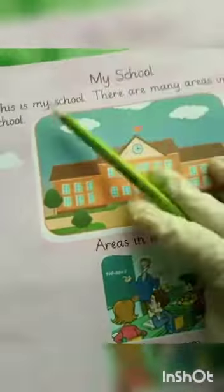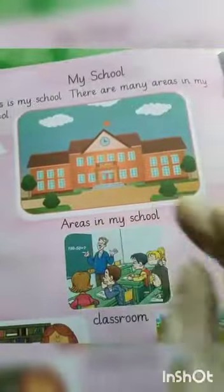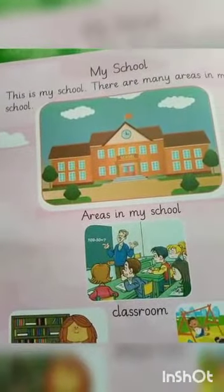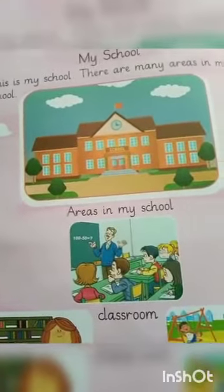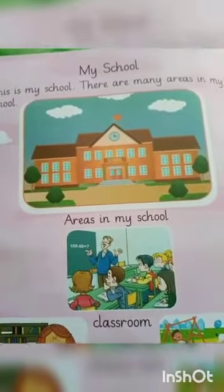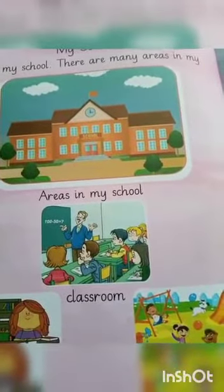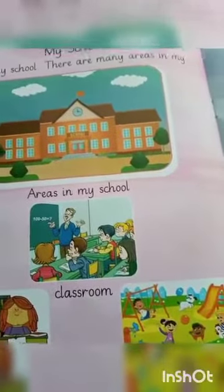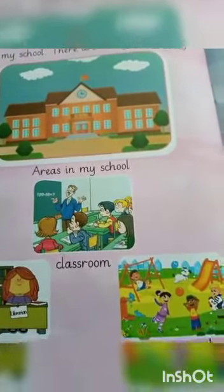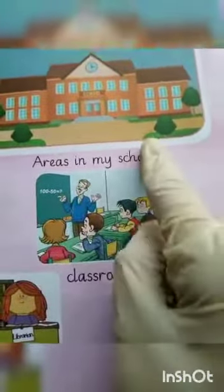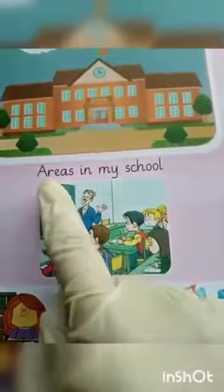Let's start reading. This is my school. There are many areas in my school. You must see different areas in your school, like a playground, many classrooms, and a library. Here we see the areas in my school.